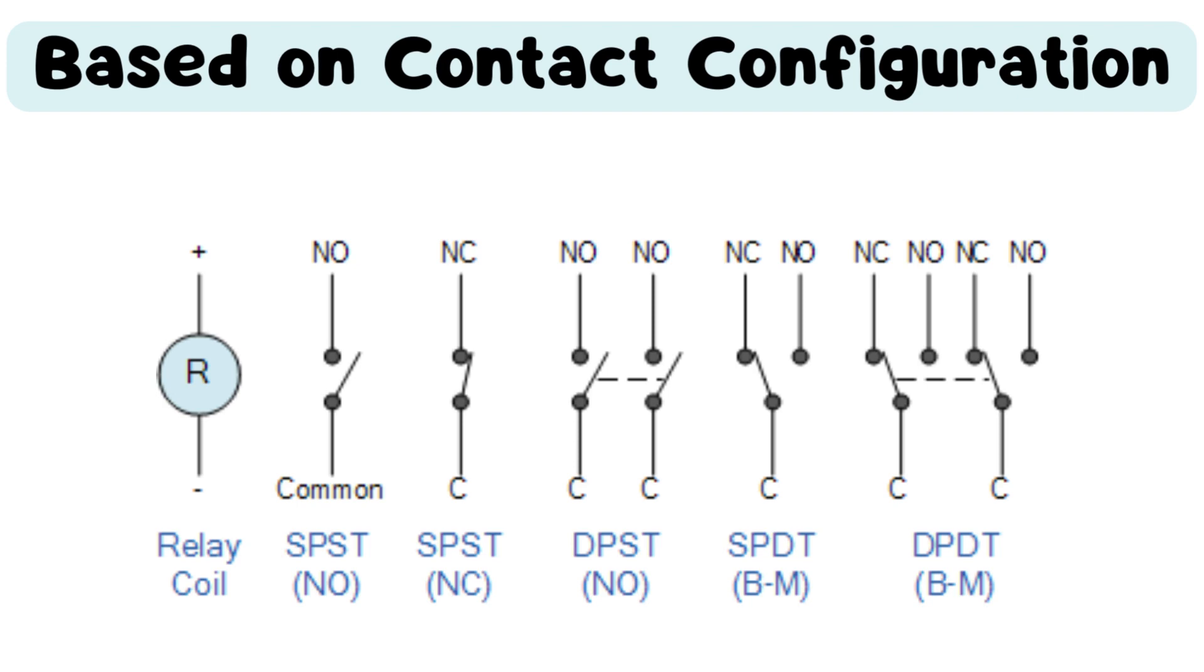Double-Pole Single-Throw (DPST) Relay: It has two sets of contacts, each with a normally open or normally closed state. Double-Pole Double-Throw (DPDT) Relay: It has two sets of contacts, one set is normally open and the other is normally closed.